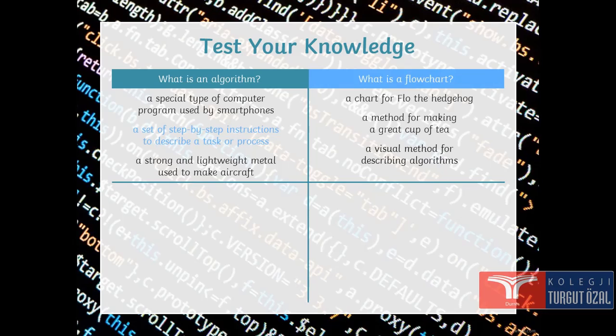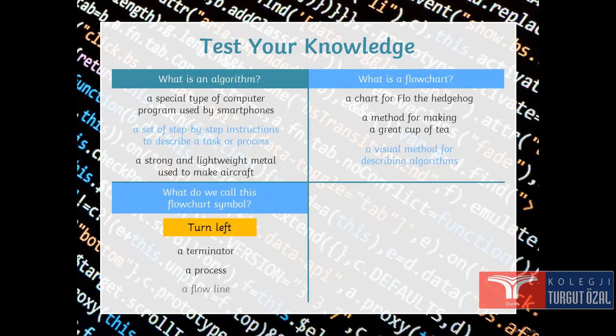What is a flow chart? A chart for Flow, the hedgehog, a method for making a great cup of tea, a visual method for describing algorithm. Which of these? Is a visual method for describing algorithm.